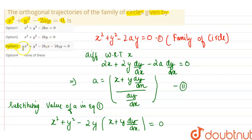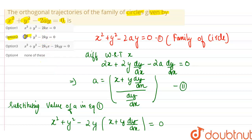Looking at the options, option number 2 is correct — that is x² + y² - 2ky = 0. Here k is just a constant; in this question we chose c, so it is the same expression. Option number 2 is the correct answer.